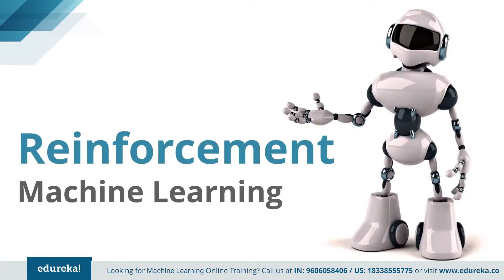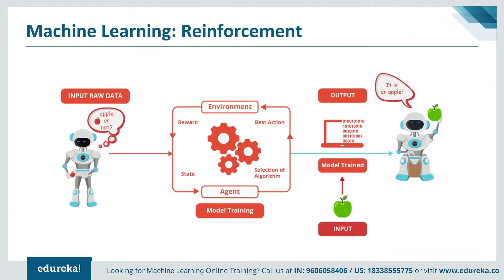Let's discuss the third and last type of machine learning: reinforcement learning. Reinforcement learning is a type of machine learning algorithm which allows software agents and machines to automatically determine the ideal behavior within a specific context to maximize performance. It is about interaction between two elements: the environment and the learning agent. The learning agent leverages two mechanisms — exploration, when acting on a trial-and-error basis, and exploitation, when acting based on knowledge gained from the environment. The environment rewards the agent for correct actions, which is the reinforcement signal.